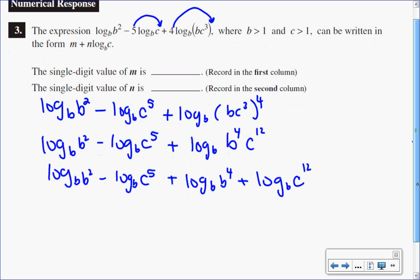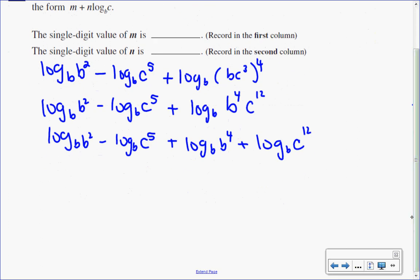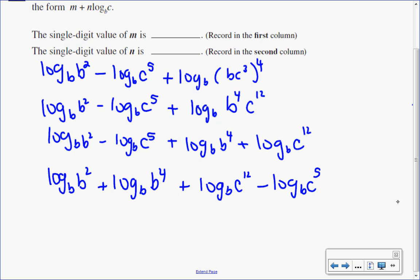So I want to rearrange it so that all my arguments of b are together and all my arguments with c are together. So I'll rewrite this as log base b of b squared plus log base b of b exponent 4 plus log base b of c exponent 12 minus log base b of c exponent 5. So I wrote them all together like that,